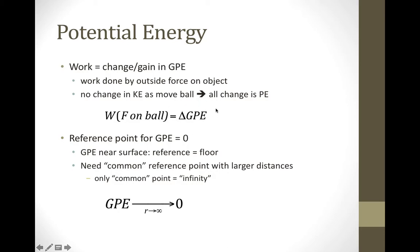This is only the change in potential energy, so we need to pick a reference point where GPE equals zero. Before, we picked the floor as a convenient reference point. Now we'd like a common reference point relevant to essentially any celestial object. The most convenient common reference point would be something infinitely far away — and this is really just a convention — the gravitational potential energy goes to zero as r goes to infinity. This convention is often used for forces that follow an inverse square law.